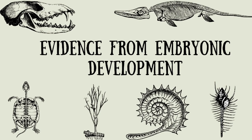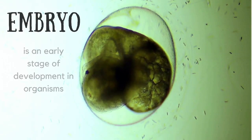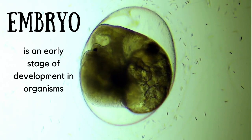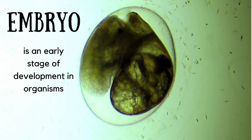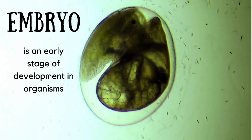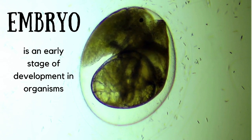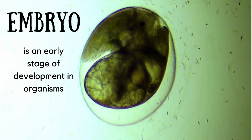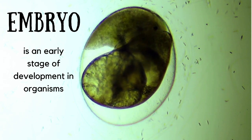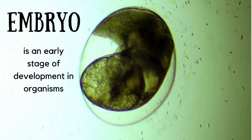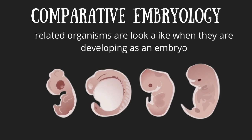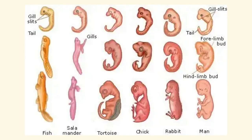Another evidence of evolution comes from embryonic development. An embryo is an early stage of development in organisms. Embryonic development includes stages such as blastula, gastrula, and organogenesis. Species that are closely related exhibit similar embryonic development, even when at the adult stage the organisms are quite different.